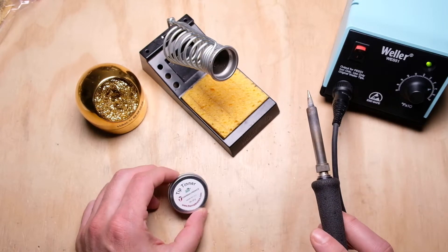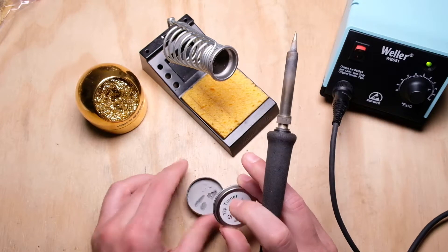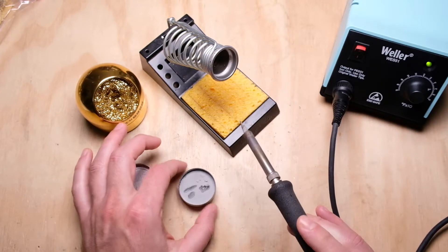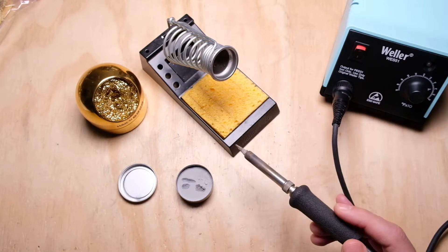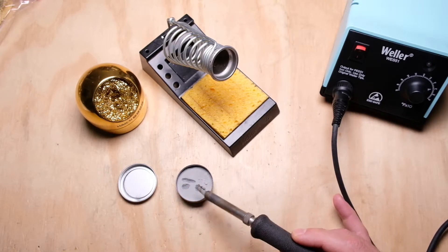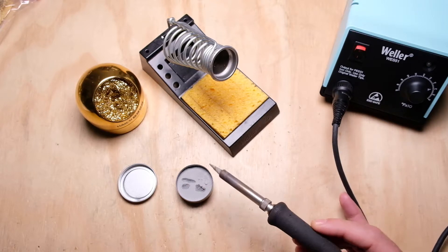Second thing you can use is a tip tinner. This is the Thermaltronics tip tinner, which is pretty popular, but they all kind of do the same thing. This is basically, it's almost like a solder. It's basically a compressed tablet of pure tin with some ammonia in there as well.